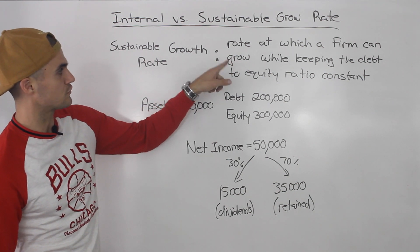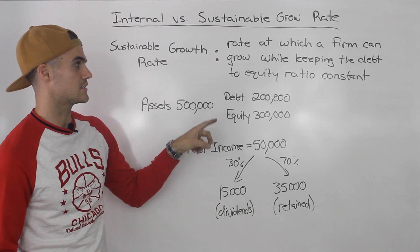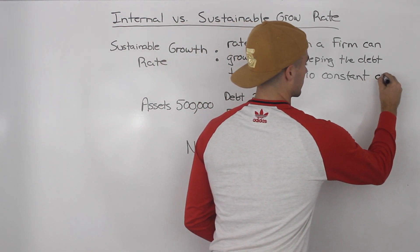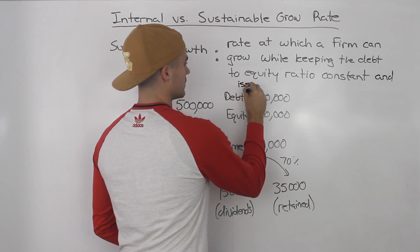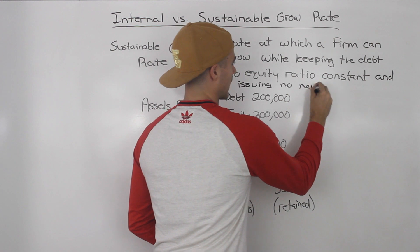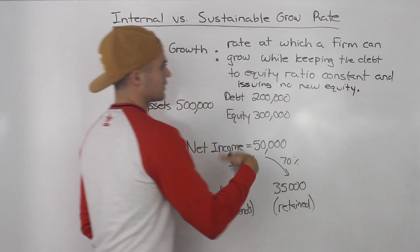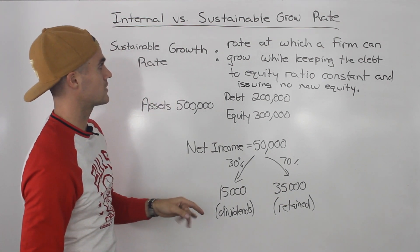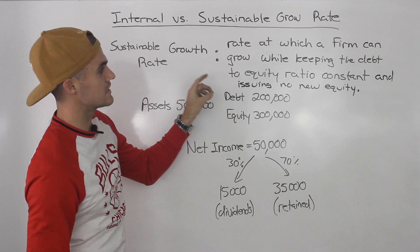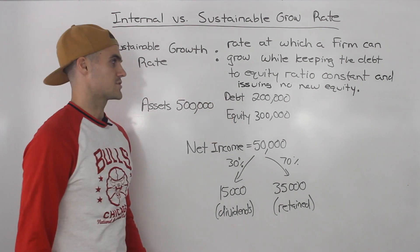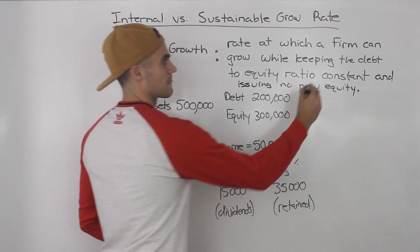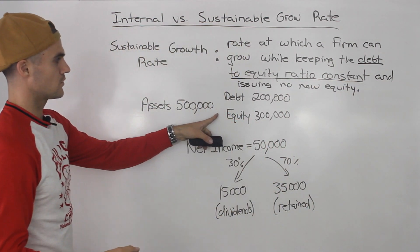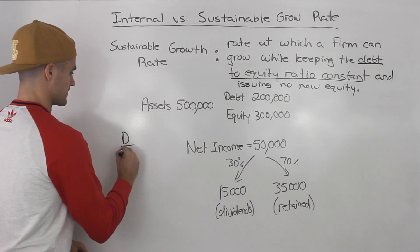Let's read the definition one more time: the rate at which a firm can grow while keeping the debt-to-equity ratio constant and issuing no new equity. Because you could keep the debt-to-equity ratio constant while increasing both indefinitely — but that's not what the sustainable growth rate is about. The key difference is that the debt-to-equity ratio must remain constant. So the first thing to do is figure out the current debt-to-equity ratio.